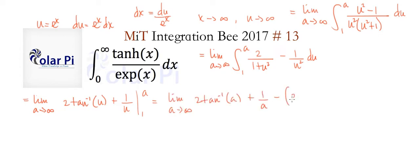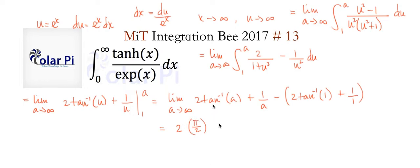Plugging in a and plugging in one and taking the difference, it first looks like this. When we plug in a we get arctan(a) + 1/a, and when we plug in one we get arctan(1) + 1. Now, as a goes to infinity, tan inverse of a goes to π/2 — that's a horizontal asymptote for arctan. So this part gives 2·(π/2), and as a goes to infinity 1/a goes to zero.